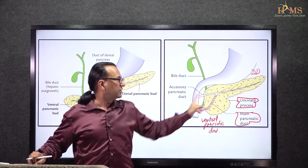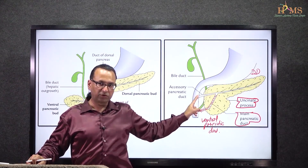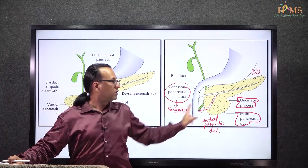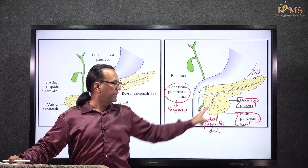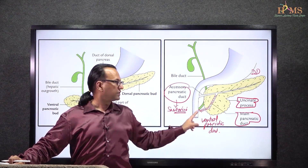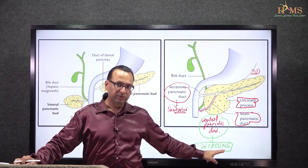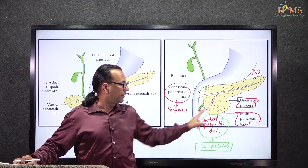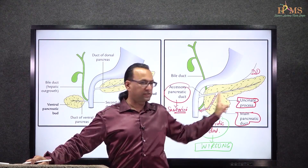The accessory pancreatic duct is the duct of Santorini, and it is formed by the dorsal pancreatic bud. The main duct here, the Wirsung duct of the pancreas, is proximally formed by the ventral pancreatic bud and distally formed by the dorsal pancreatic bud.